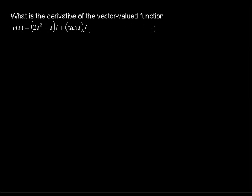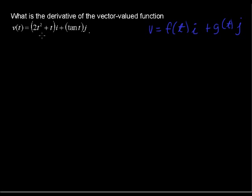Let's talk about the vector function. In general, a vector function v equals some f of t function times i, plus g of t times j. So right here, I've got the f of t function — that's 2t squared plus t — and what is multiplied by j would be the g of t in our general form.